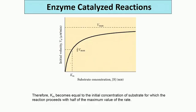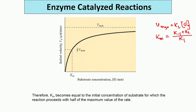We will again start with the two parameters: Vmax, which is equal to K2 into E0, and Km, which is equal to K-minus-1 plus K2 divided by K1. Km has a concentration unit.